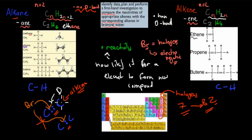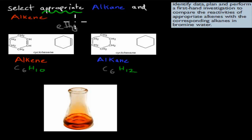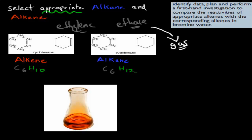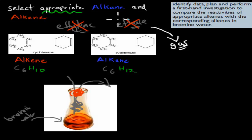We use bromine water because bromine loves to grab electrons and will readily react with ethylene. However, before we start, we need to select appropriate alkenes and alkanes. Why wouldn't we just choose ethylene and ethane? The reason is they're both gases. If we put gases into bromine water, they won't react properly — they'll just move quickly and escape. So they're not appropriate because they're not liquid and won't effectively react with the bromine water.